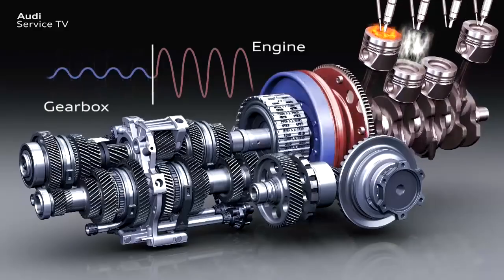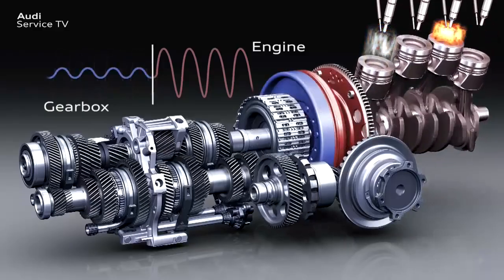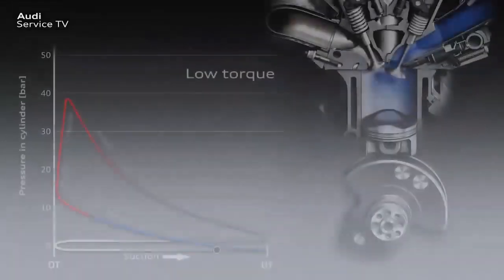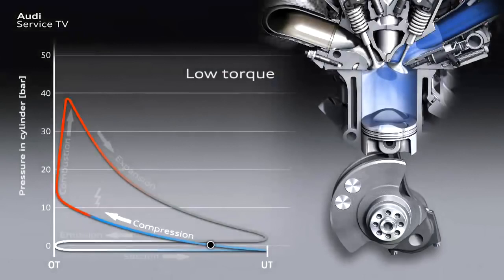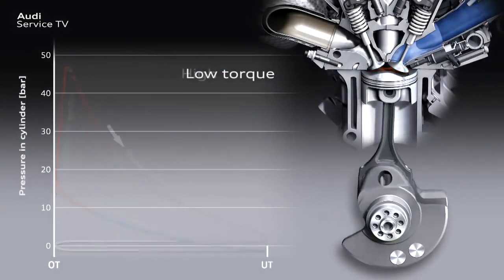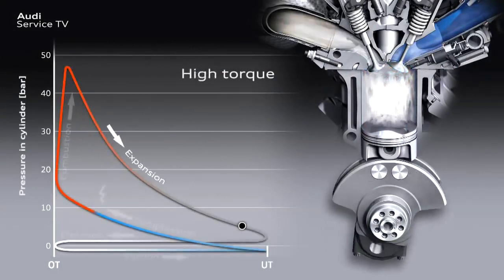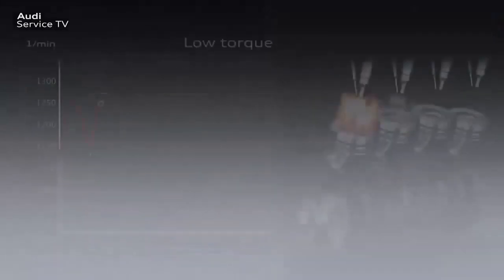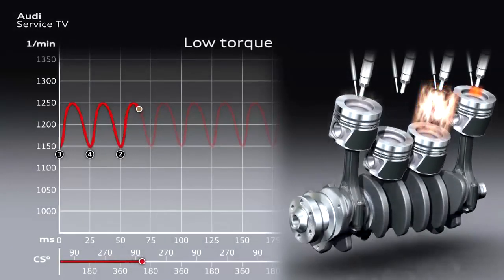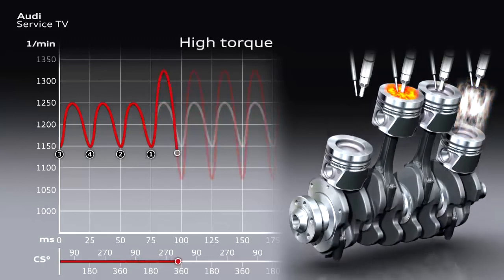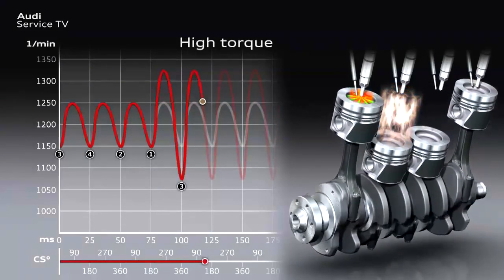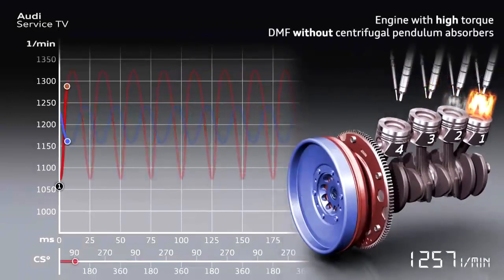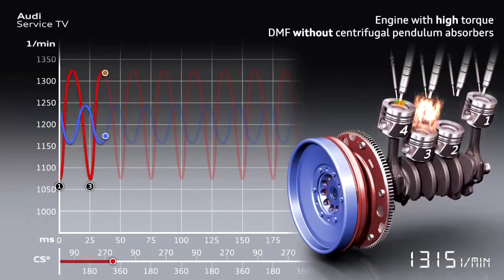To date, torsional vibrations could be reduced with dual mass flywheels to the extent that comfortable driving at low engine speeds was possible. Alongside engine speed and number of cylinders, engine rotational speed irregularities greatly depend on how much torque the engine produces at low engine speeds. Modern petrol and diesel engines which produce a high level of torque at a low engine speed cause greater torsional vibrations than engines that produce less torque at the same engine speed. These high torque engines place very high demands on torsional vibration damping.